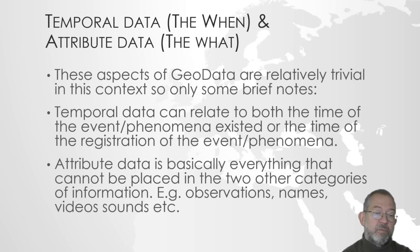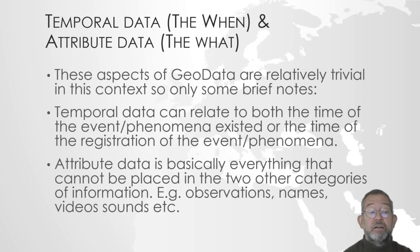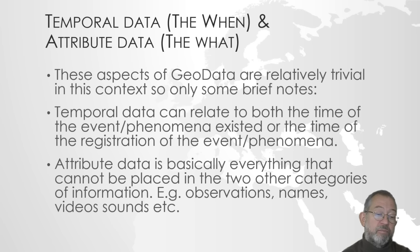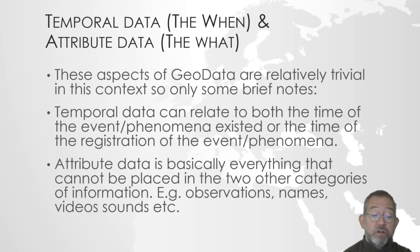If we look at the temporal and attribute data, they are relatively trivial in this context. The temporal data can have two roles: it can be when an event happened — so when was this or that forest fire — or it can be when the event was registered, when this GeoData was created. So we have two aspects of the temporal element in play. The attribute data can be all the classical types such as text and numbers, but also remember it can be video recordings, sound recordings, or photographs.